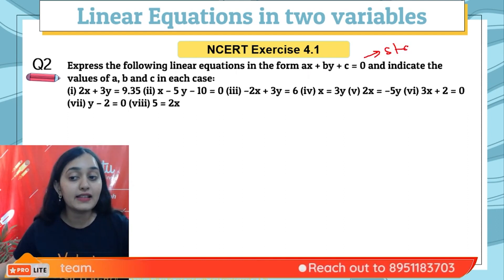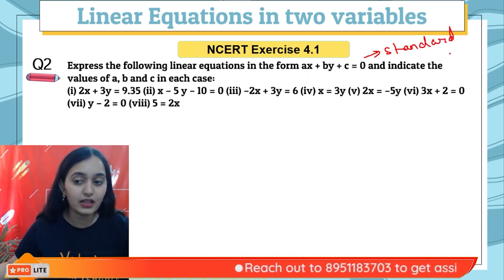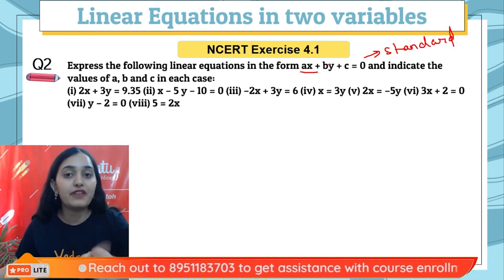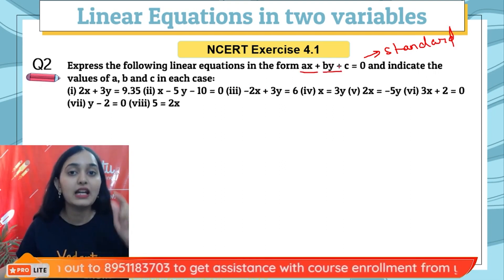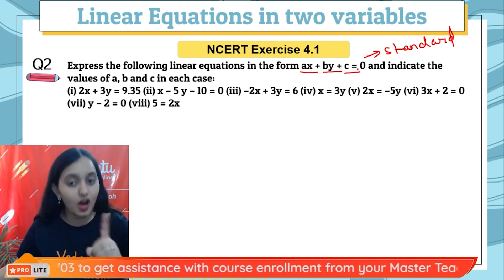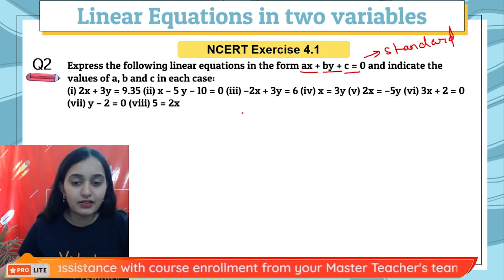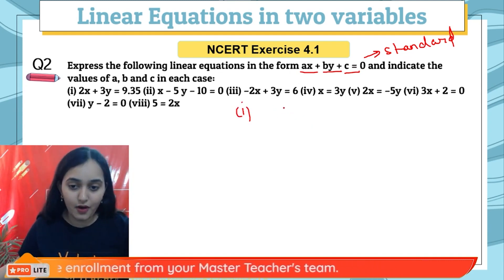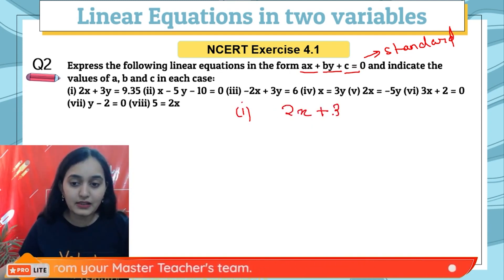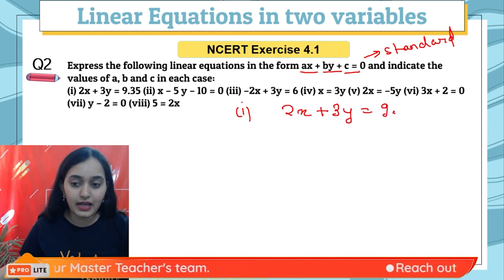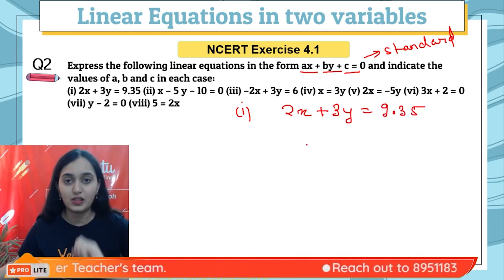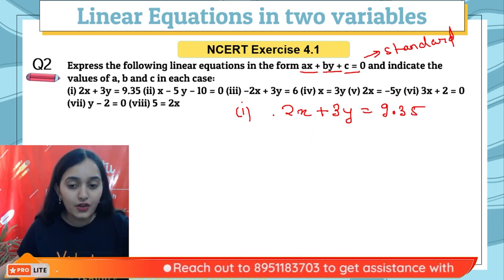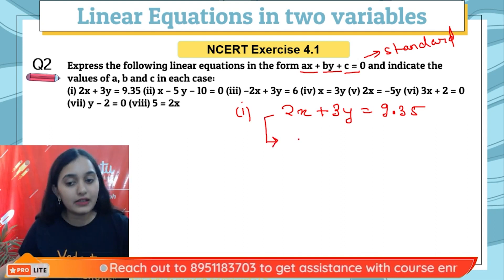Question 2: Express the following linear equations in the form AX + BY + C = 0, which is called the standard form of the equation, and indicate the values of A, B, and C. A is the coefficient of X, B is the coefficient of Y, and C is the constant term. Let us try converting all of them into standard form. The first equation given is 2X + 3Y = 9.35. As you can see, it is not in standard form, so I will convert it.